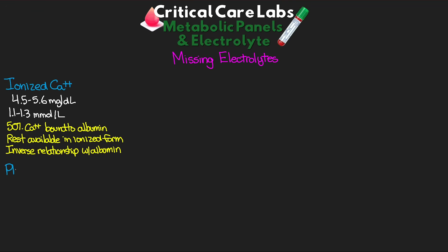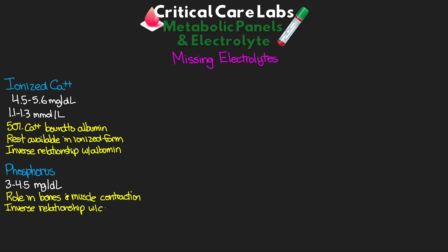Next, let's talk about phosphorus. Normal level is 3 to 4.5 mg per deciliter. Phosphorus plays a role in bones and muscle contraction and has an inverse relationship with calcium. We see elevated levels in renal and liver disease, low parathyroid hormone, and hypocalcemia. We see low levels in alcohol abuse, poor nutrition, high parathyroid hormone, and hypercalcemia.